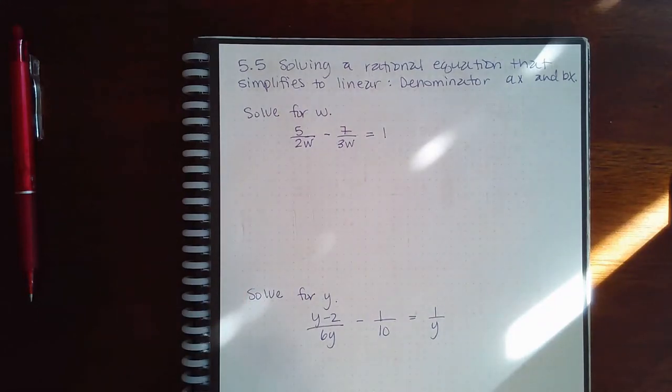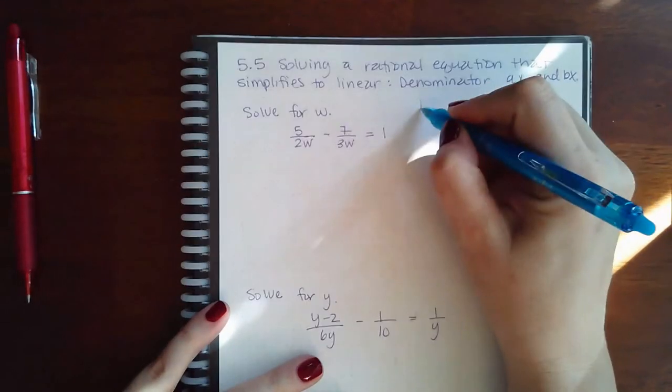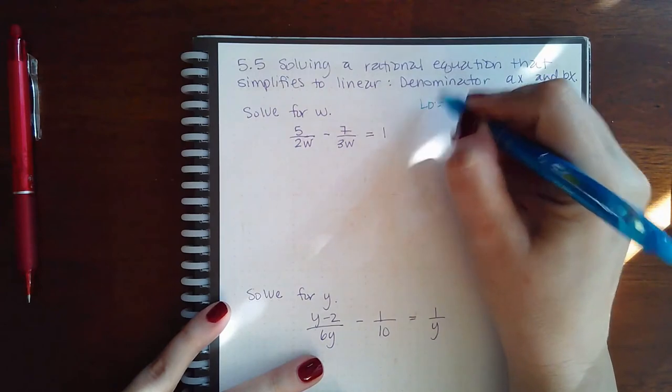Here we have solving a rational equation that simplifies to a linear denominator AX and BX. So we're going to do the same thing as we've been doing. We've got to find the LCD.